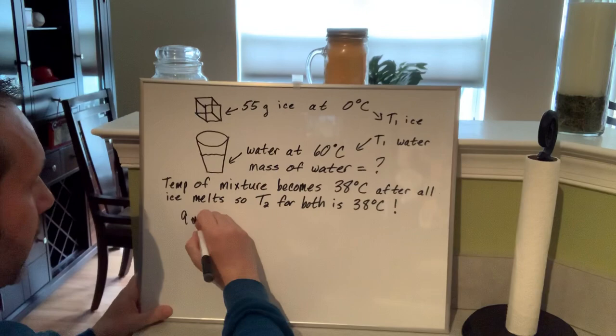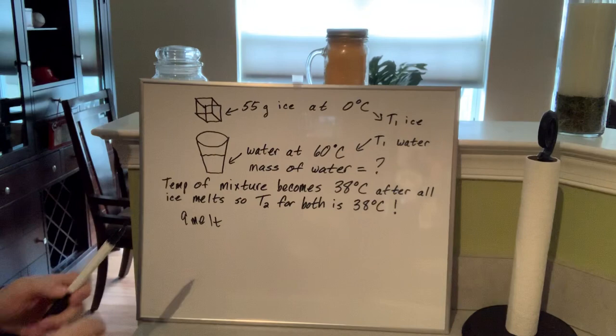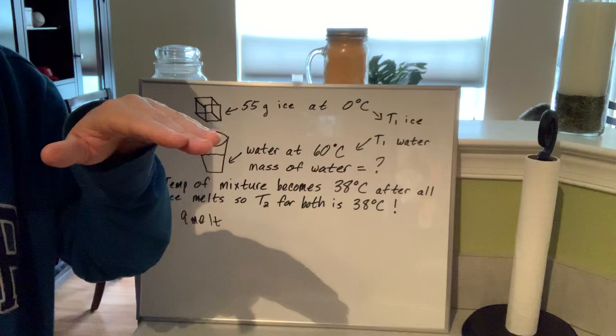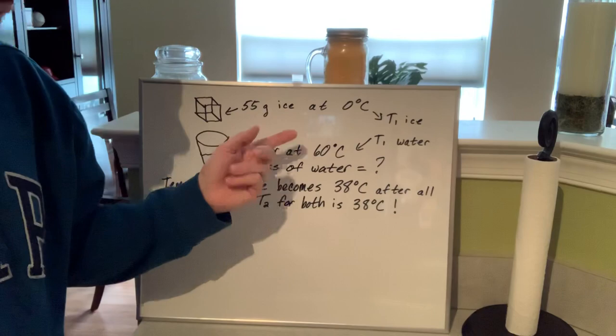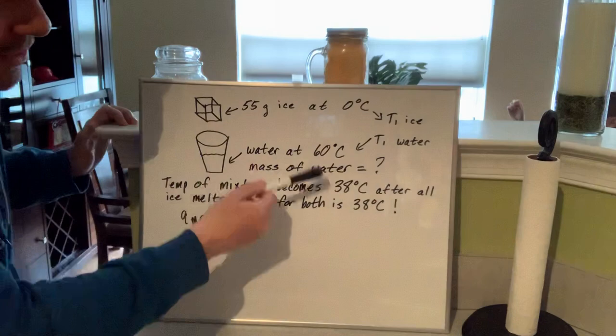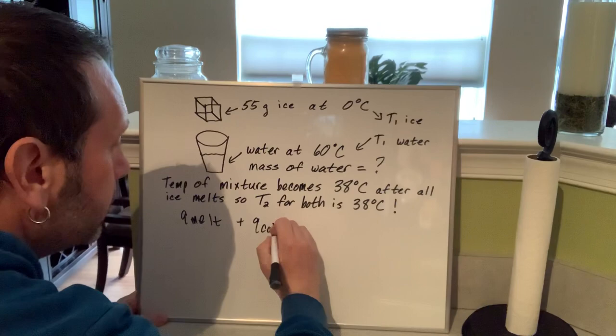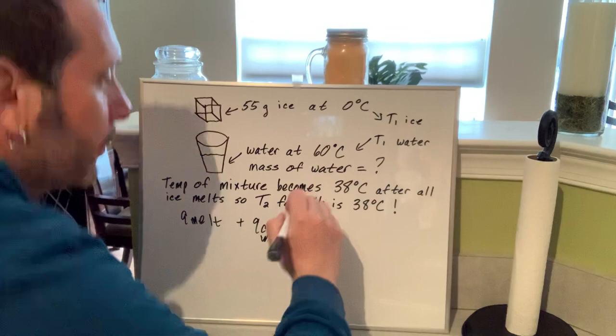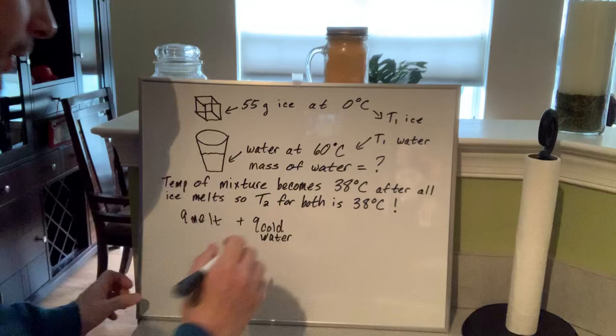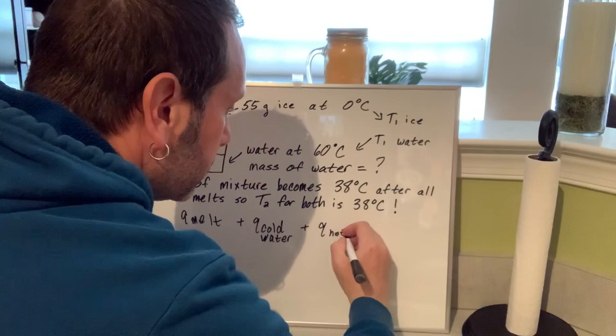Q_melt is for the ice melting. When that ice melts, the temperature of the water in the cup is going to come down a little bit. Now you have cold water at zero (which used to be ice) and the warm water somewhere between 60 and 38. When the ice melts it becomes cold water — let's call that Q_cold water. And let's call the water that was already in the cup Q_hot water, since it started at 60 degrees Celsius.